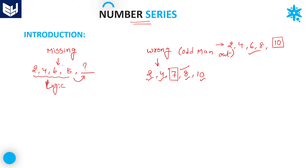In missing number series, there will be a question mark — maybe at the end, middle, or start of the sequence. Those kinds of questions are called missing number series, and the other kind are called wrong number series. These are the two types of questions that may be asked. In both missing number and wrong number series, we have different models of problems.